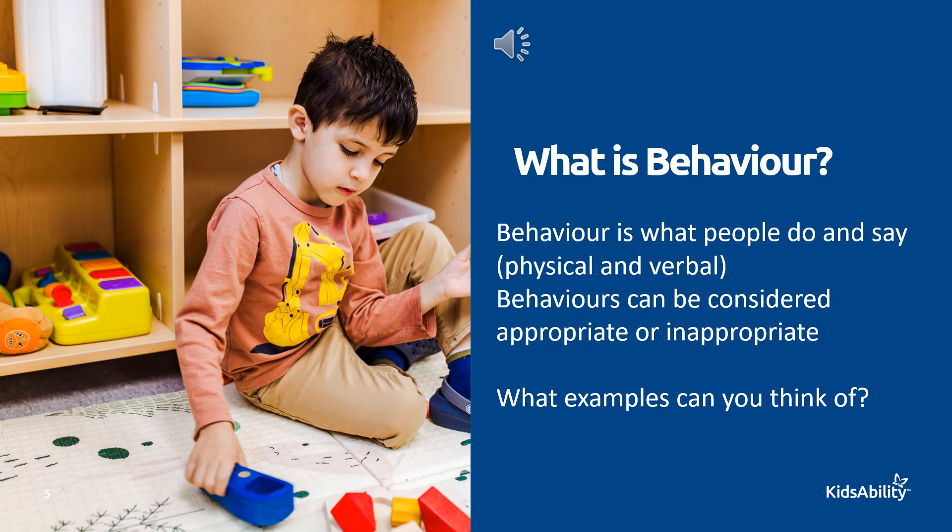So what is behavior? Behavior is anything that people do, including how they move and what they say. It's either physical or verbal, and it is always observable, meaning you can see it or notice it. Behaviors can be considered appropriate or inappropriate. Some examples of appropriate behavior might be asking for toys, waving, running, jumping, rolling a ball, or saying hello.